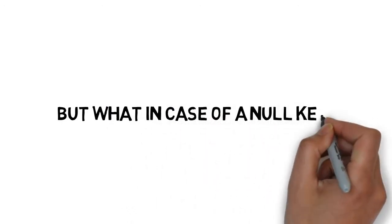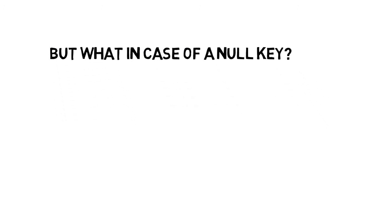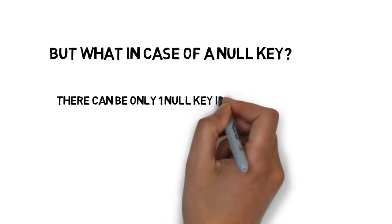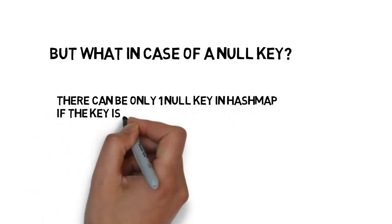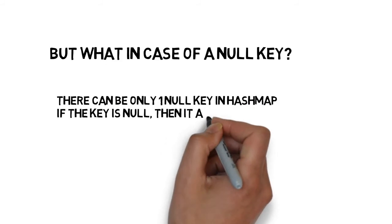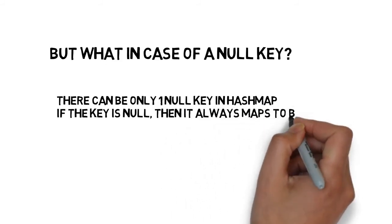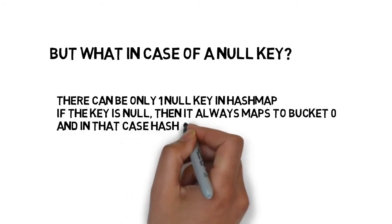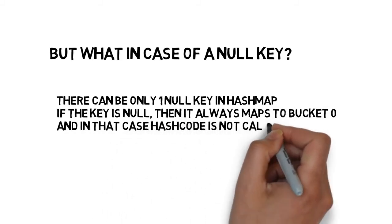But what in case of a null key? There can be only one null key in the hash map. If the key is null, then it always maps to bucket zero and in that case hash code is not calculated.